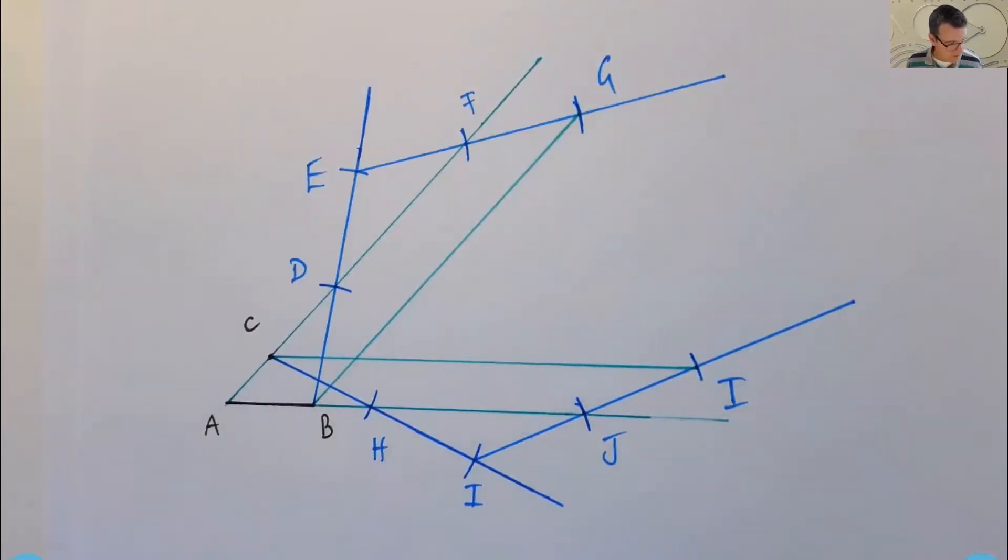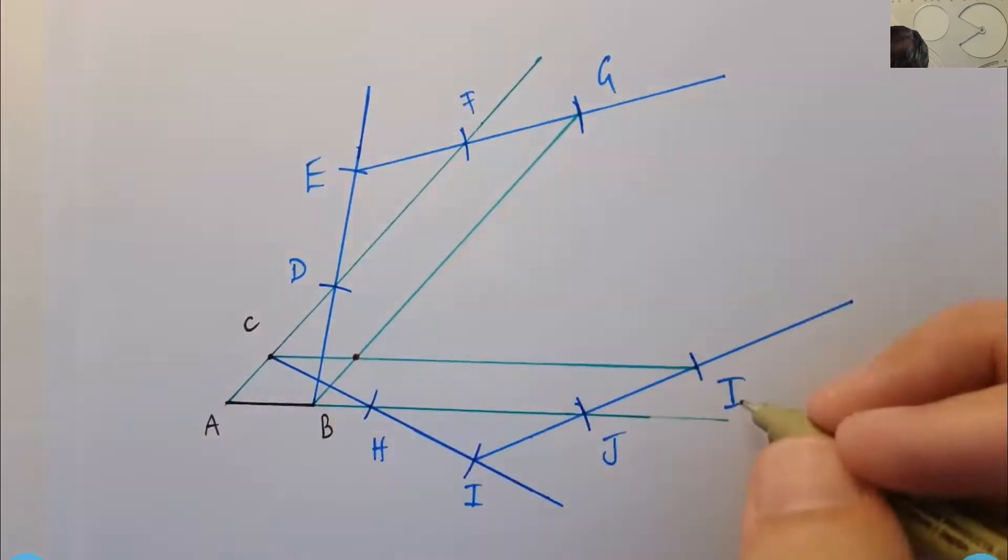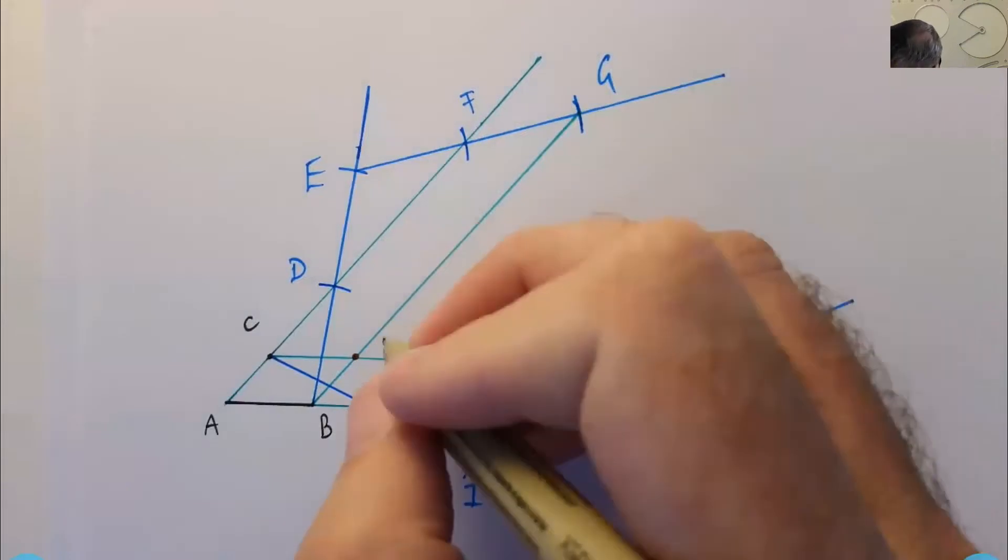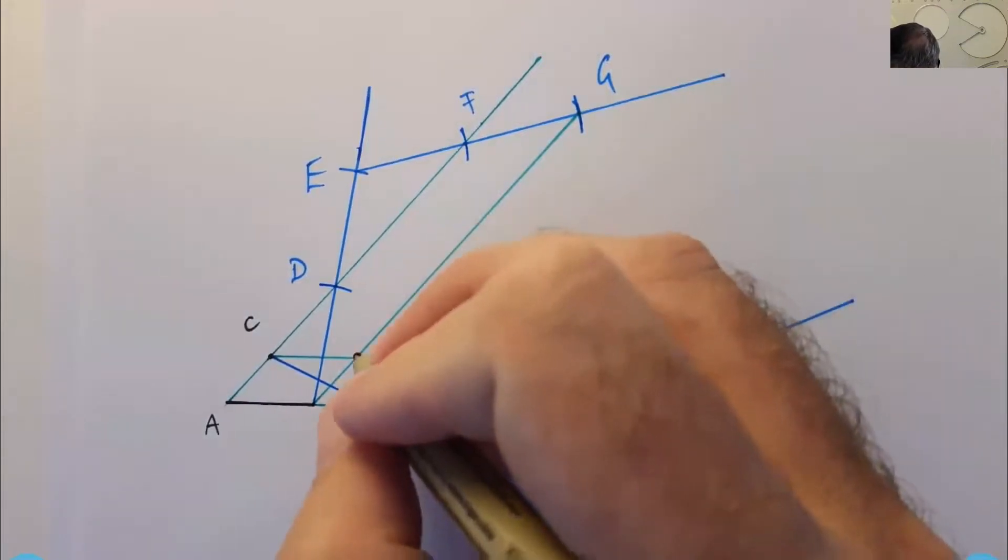All right. Now we've also got, if you look carefully, our final point of intersection right here, let's call that, oh, hang on. H, I, J. Oh, that should be K. Sorry. Let me fix that up. Don't know my alphabet. H, I, J, K, and call this point L.